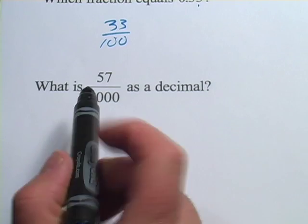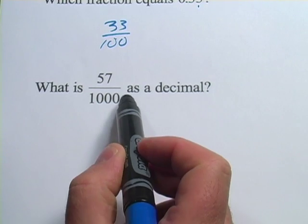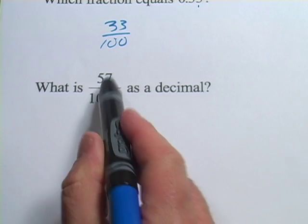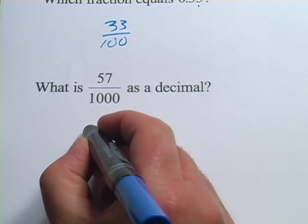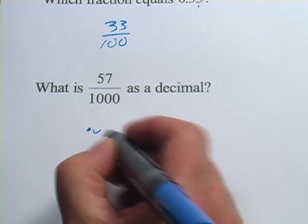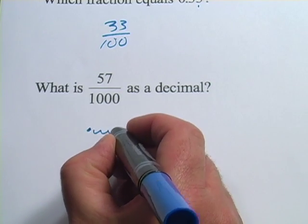We've got one more. What is 57 one-thousandths as a decimal? Now, you can punch this in on your calculator and you'll get the right answer, but let's think about this for a second. Here's our decimal point: tenths, hundredths, and thousandths.